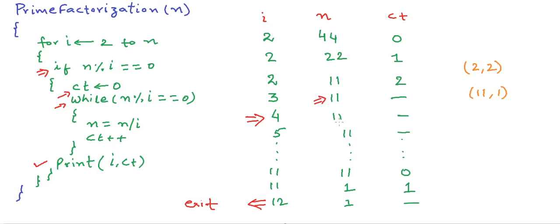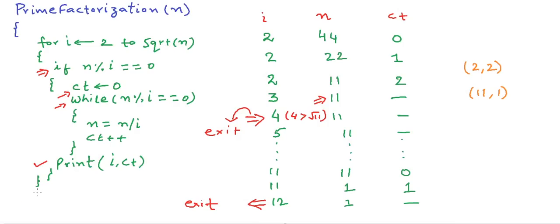We have checked up to the square root of n, there is no factor, and the remaining number is a prime number. So we can exit at this stage. I will modify the pseudo code: now I will only run the loop till the square root of n, and we exit this for loop once i exceeds the square root of n, because at this stage we know that n is now a prime number. Once we come out of this for loop,